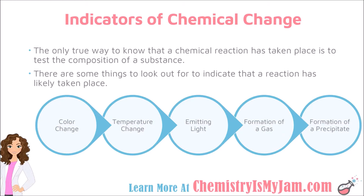The most common indicators of chemical change are color change, temperature change, emitting light, and the formation of a gas — you would recognize this through bubbles. If you were to mix two things together and bubbles formed, that would indicate that a reaction has taken place. And then the last common indicator is the formation of a precipitant.